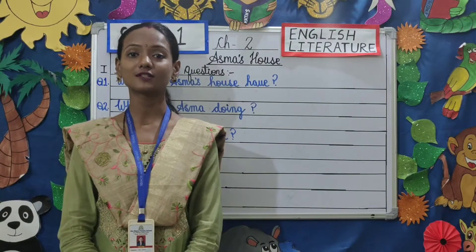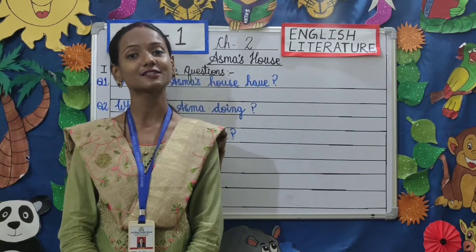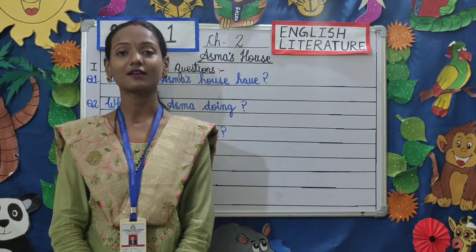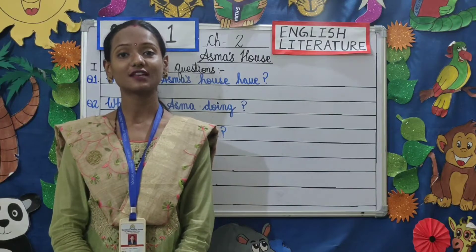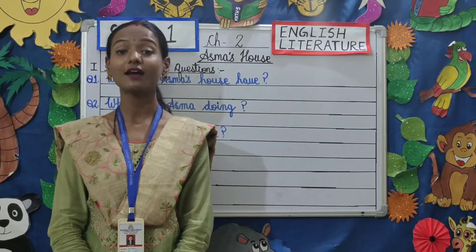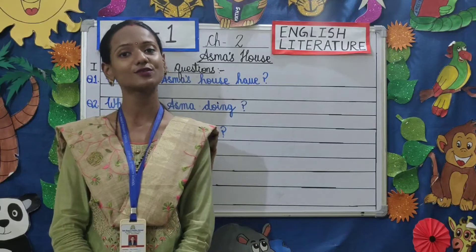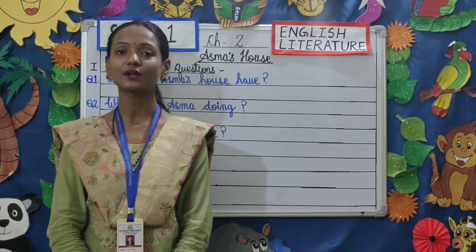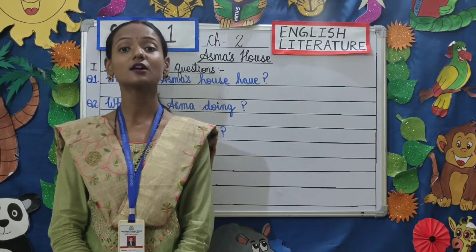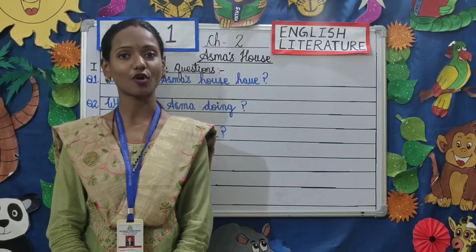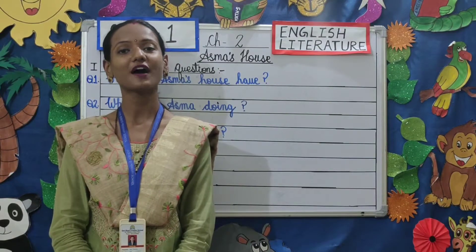Asma, a 6-year-old girl, lived in a house which was blue in colour. The house had a garden and a small gate. Asma was playing in her garden and there was a big gulmoha tree with beautiful red flowers. An owl lived in a hole in the tree. Ali, Asma's little brother, was playing in the garden with a squirrel and he gave a nut to the squirrel to eat. The squirrel ate the nut and quickly ran away. Then Asma and Ali started to think where the squirrel went, and they both together saw that the squirrel was up on the branch. So this was the story of Asma's House.